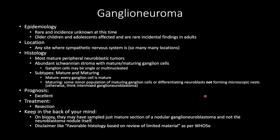Lastly, ganglioneuroma. This is rare and incidence is unknown at this time, but it occurs in older children and adolescents, and is a rare incidental finding in adults. Location is any site where the sympathetic nervous system is, so there are potentially many locations. It is the most mature peripheral neuroblastic tumor, with abundant Schwannian stroma and mature or maturing ganglion cells. Ganglion cells may be single or multinucleated. There are two subtypes: mature, where every ganglion cell is mature, and maturing, where there is a minor population of maturing ganglion cells or differentiating neuroblasts but not forming microscopic nests — otherwise consider intermixed ganglioneuroblastoma. Prognosis is excellent and treatment is resection.